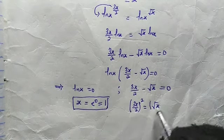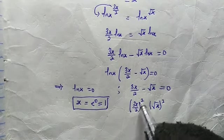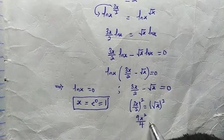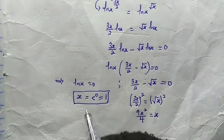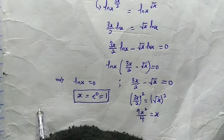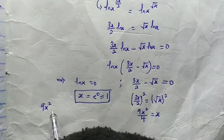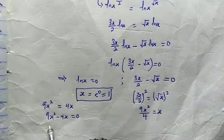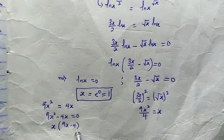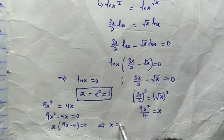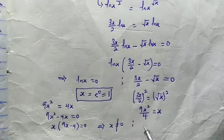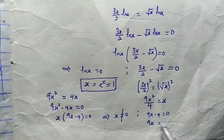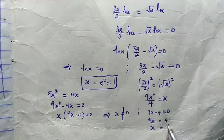Let us square both sides. From the left we have (3x over 2) squared, giving us 9x squared over 4, and this equals x. Cross multiplying gives 9x squared equals 4x, so 9x squared minus 4x equals 0. Factoring out x gives x times (9x minus 4) equals 0. This implies x equals 0, which we already know is excluded, and 9x minus 4 equals 0. When 4 crosses over, we get 9x equals 4, and dividing both sides by 9 gives x equals 4 over 9.